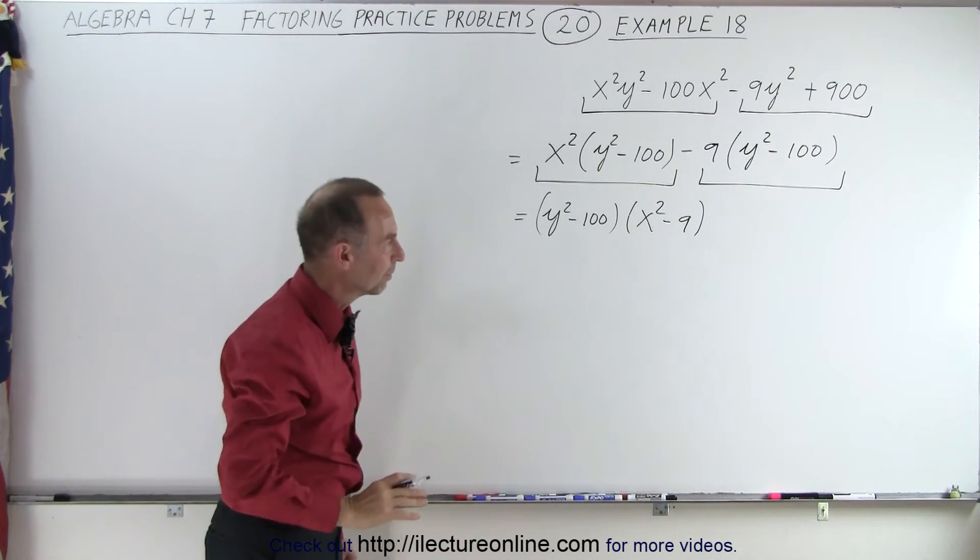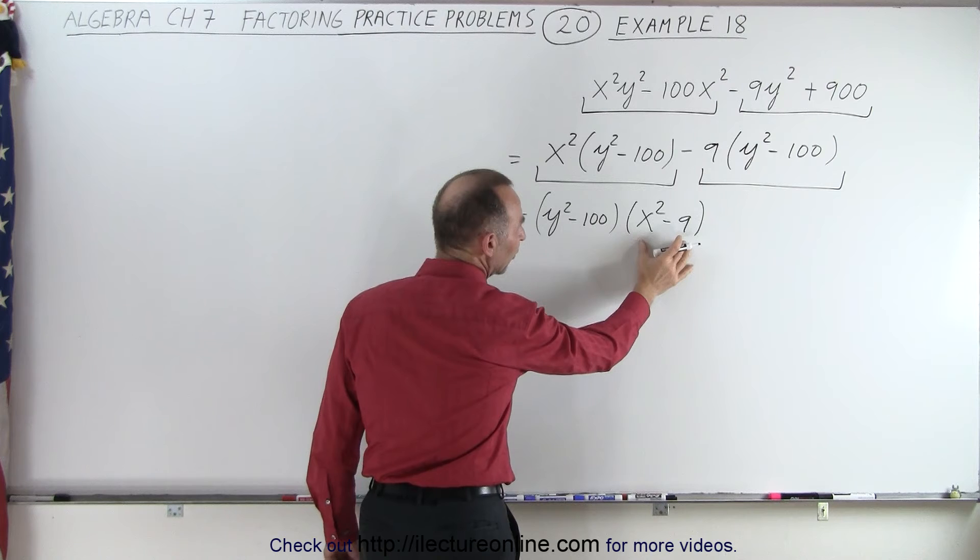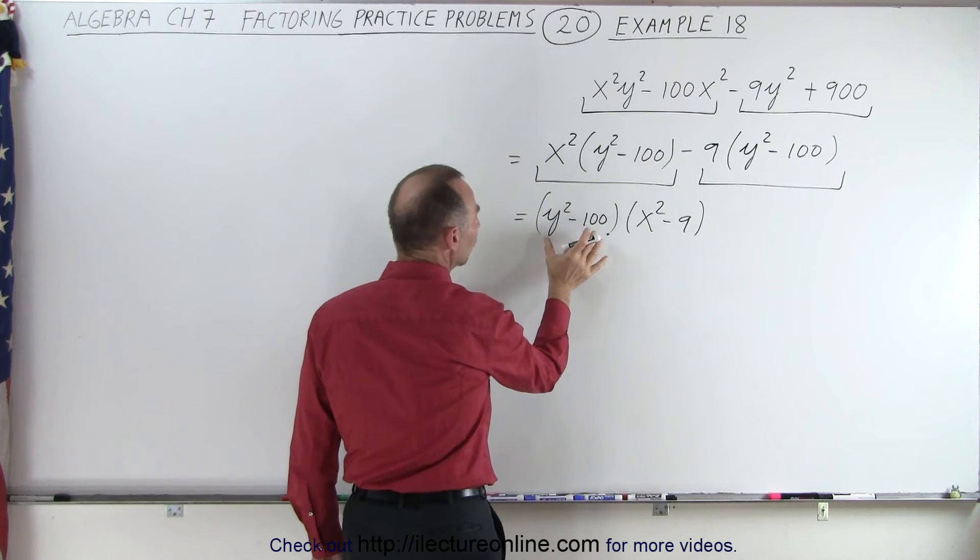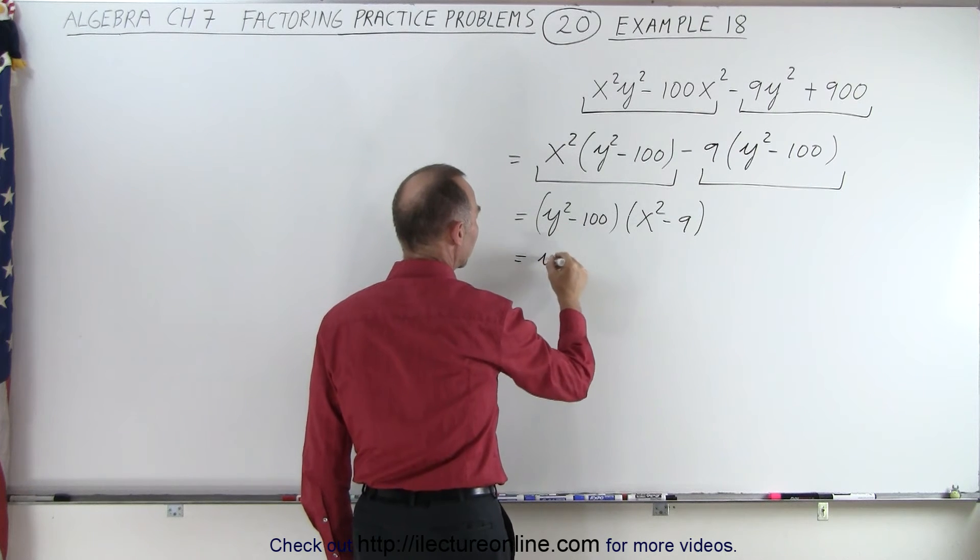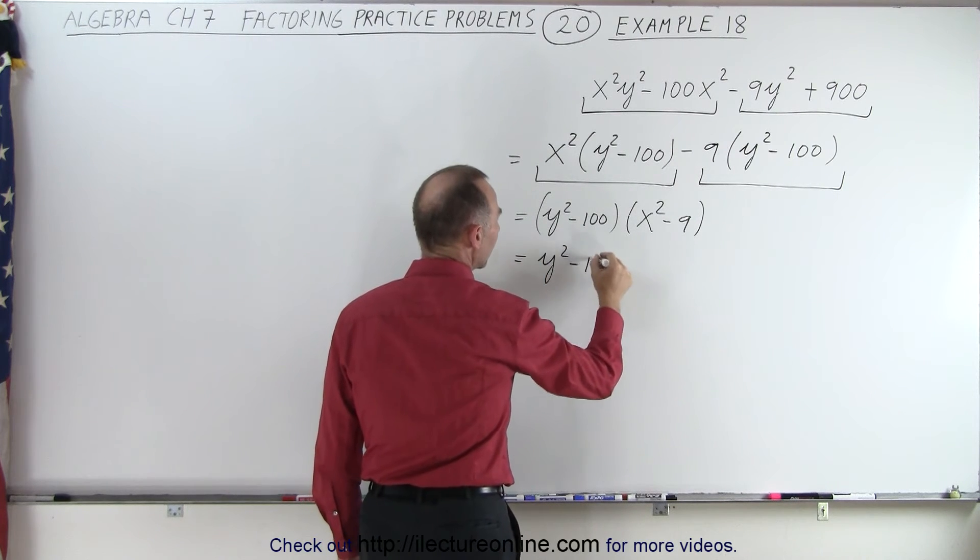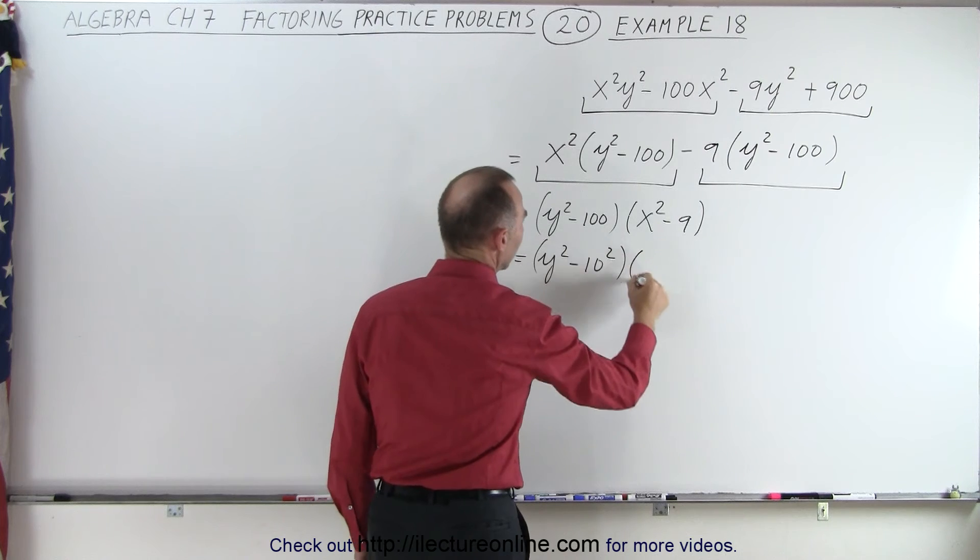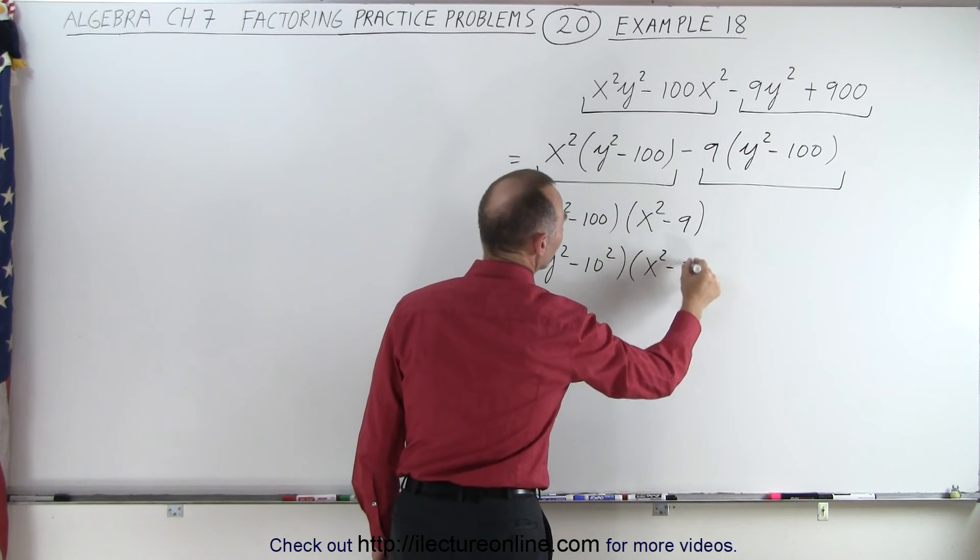But we're not done yet because notice that this is the difference of squares. This is x squared minus 3 squared. And this is y squared minus 10 squared. You can write it like that to make it a little bit easier to see. Like this. And then x squared minus 3 squared.